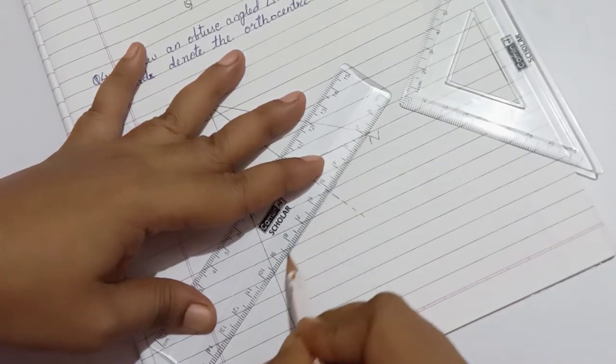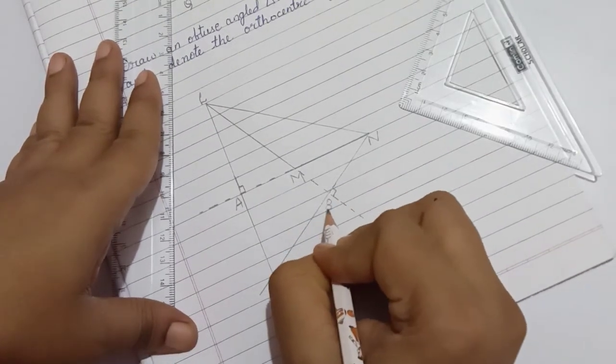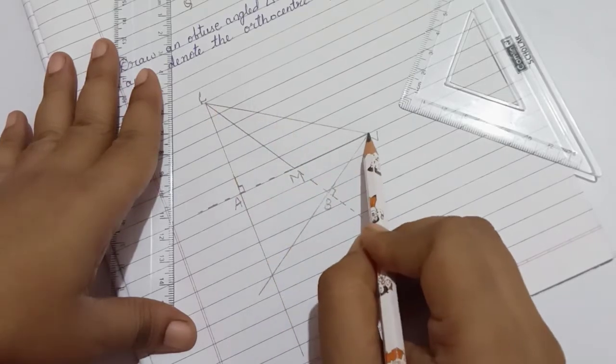Let it intersect the first altitude. Label this as B. Now we are left with segment L, N.